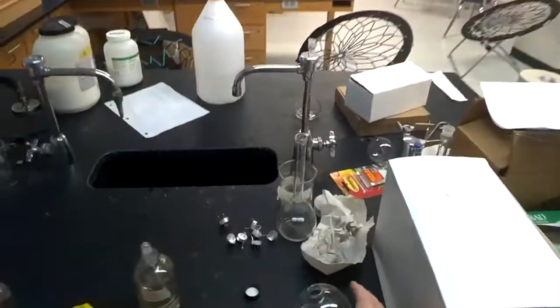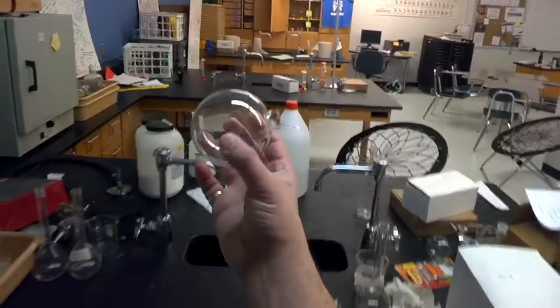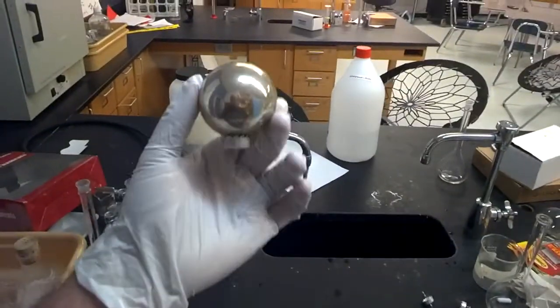So in this experiment what we're going to do is we're going to actually silver a glass ornament. So we're going to take this glass ornament and make it look something similar to this here.